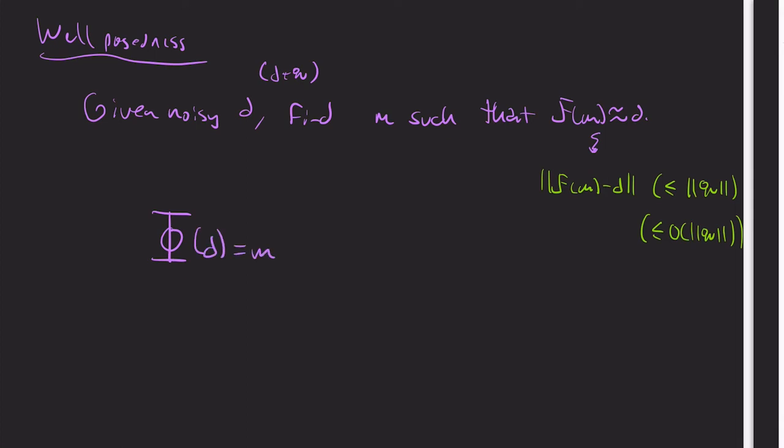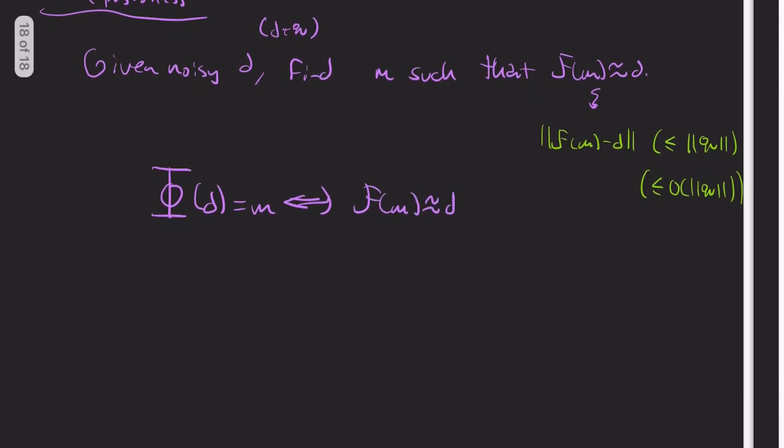The point is, it depends on your experiment. You don't know how precise you are, necessarily. So I'm going to denote this as a map phi of d equals m, if and only if f of m approximately equals d, again in this sense.